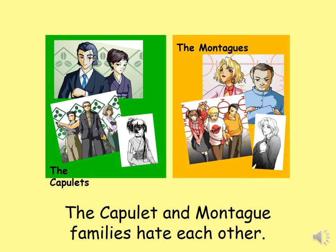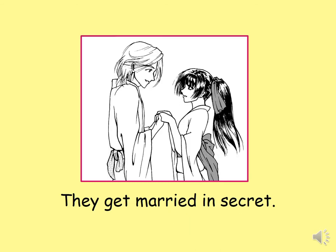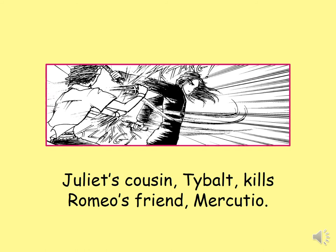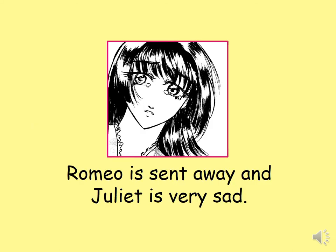The Capulet and the Montague families hate each other. Romeo and Juliet meet and fall in love. They get married in secret. Juliet's cousin Tybalt kills Romeo's friend Mercutio. Romeo is very angry and kills Tybalt. Romeo is sent away and Juliet is very, very sad.